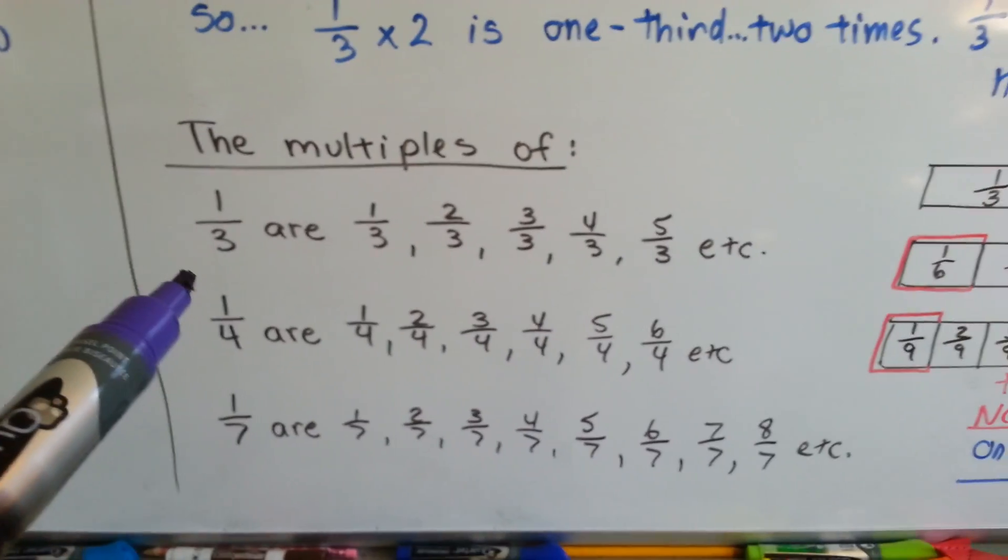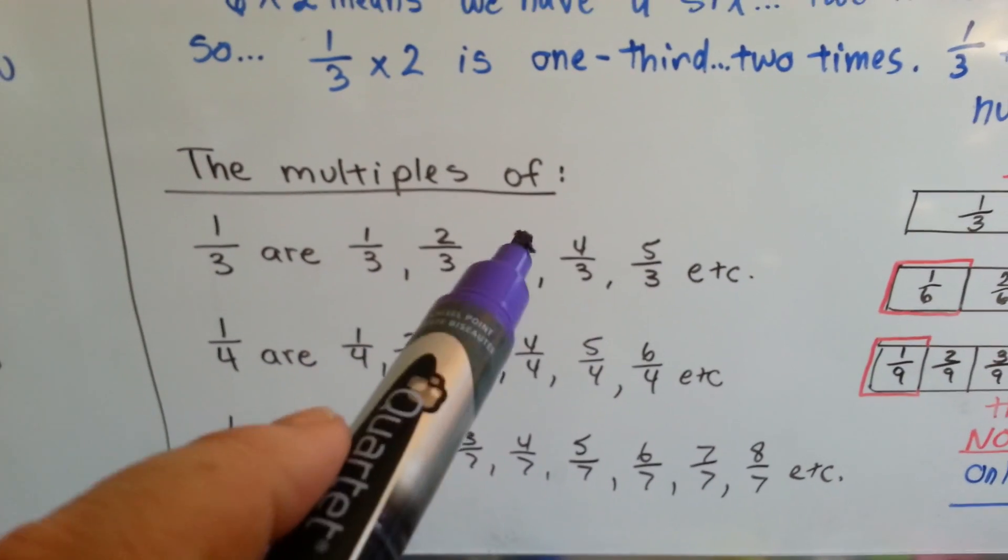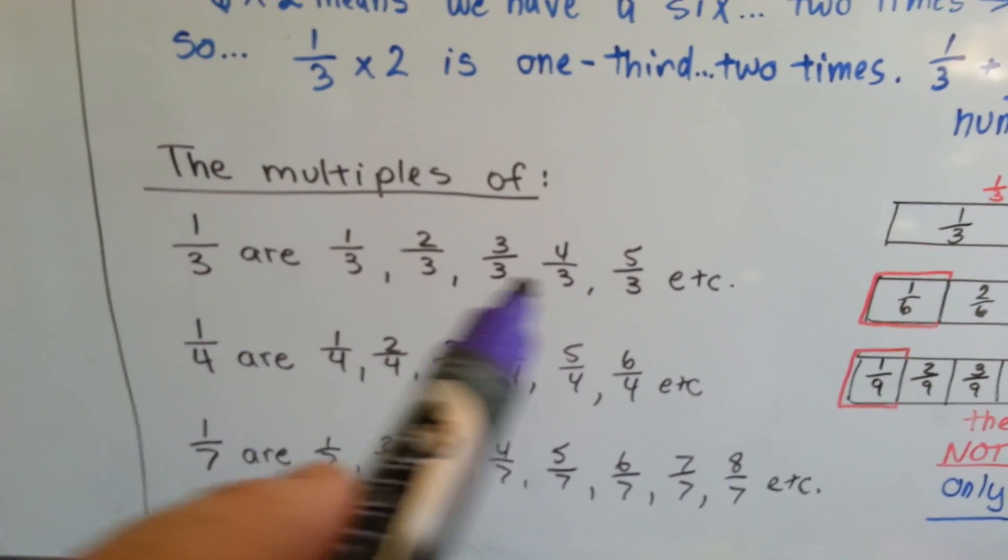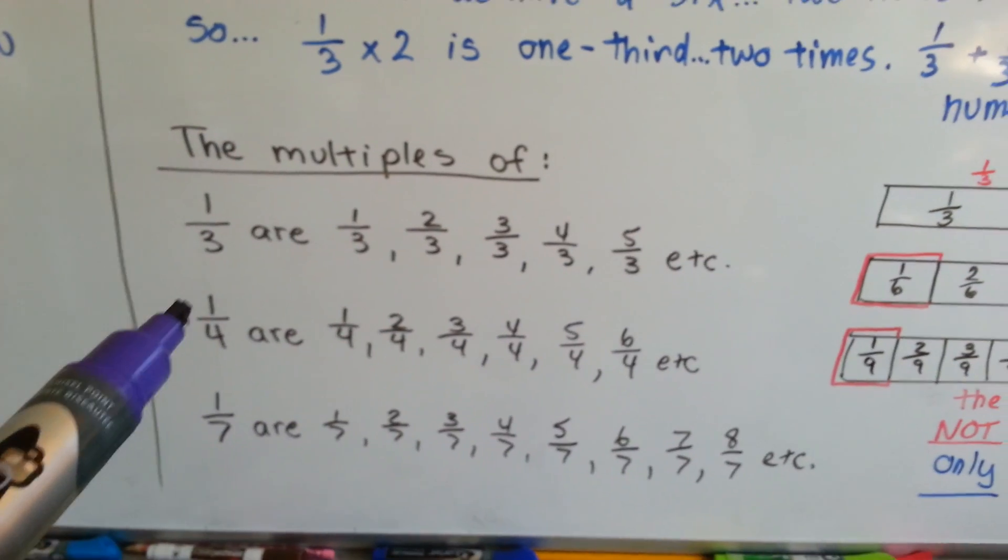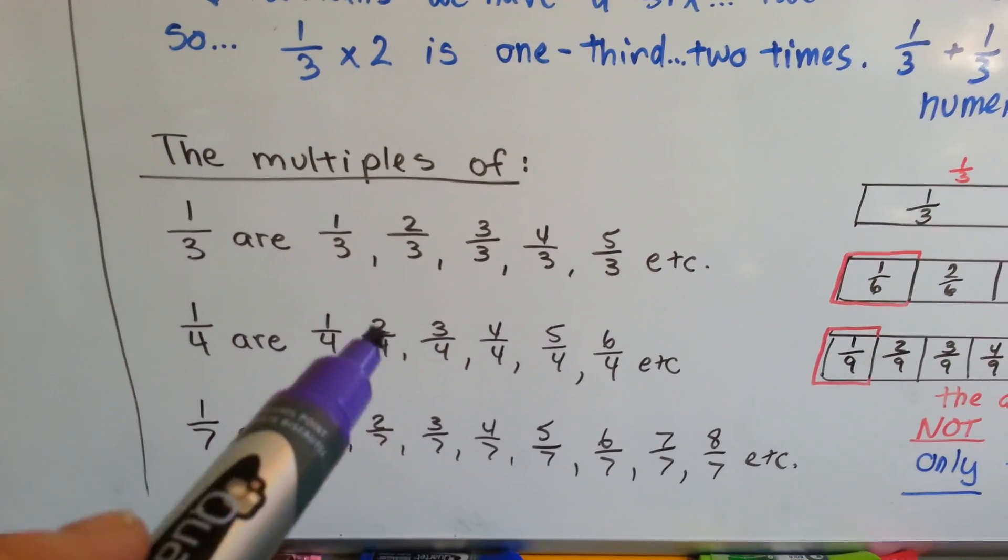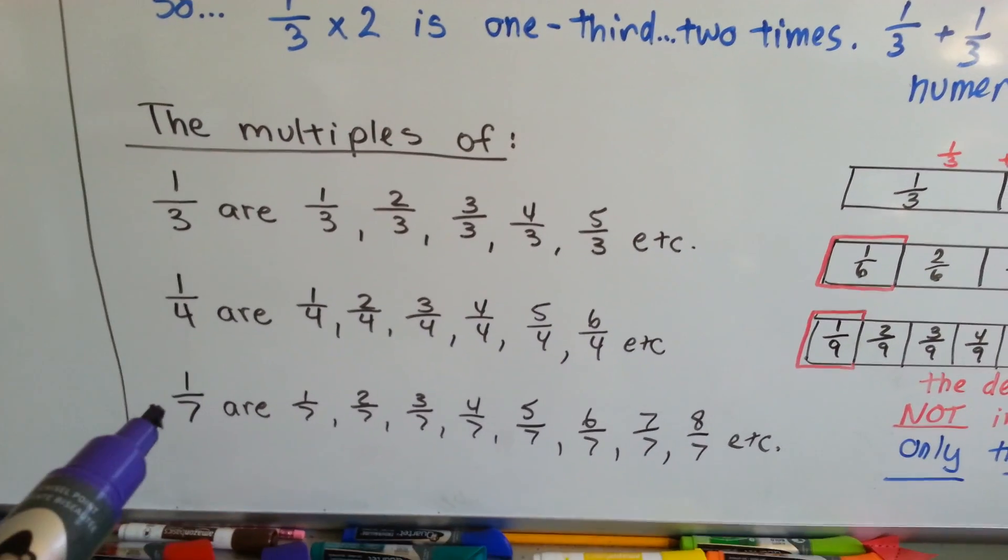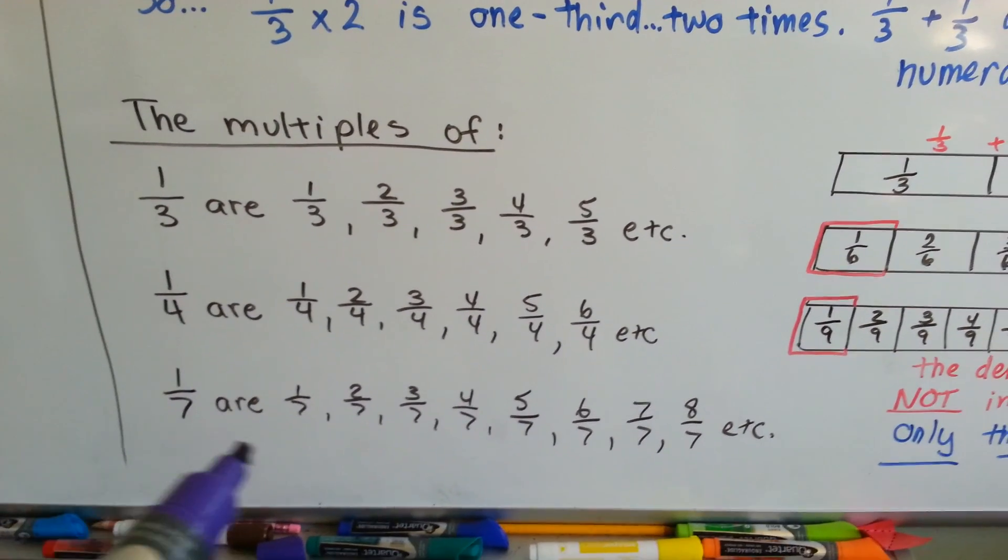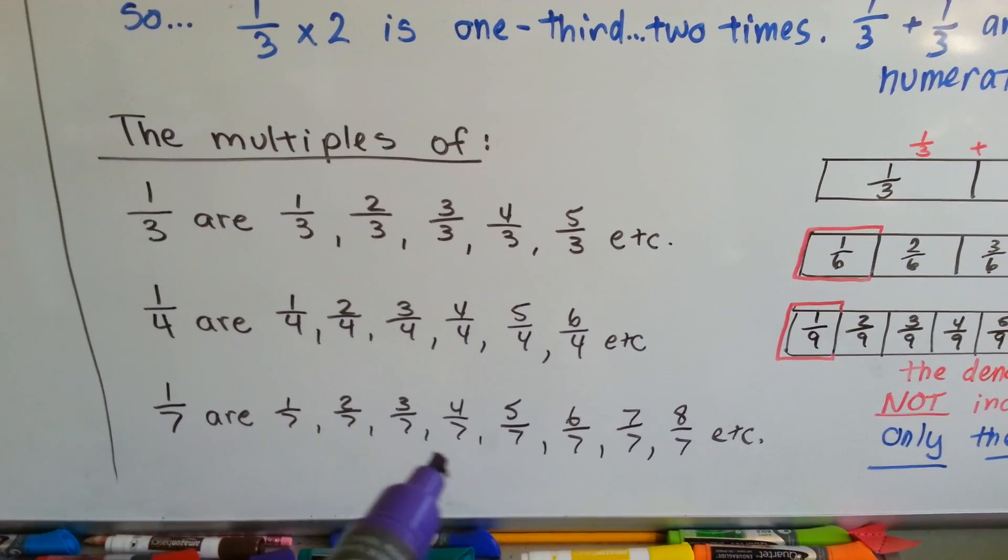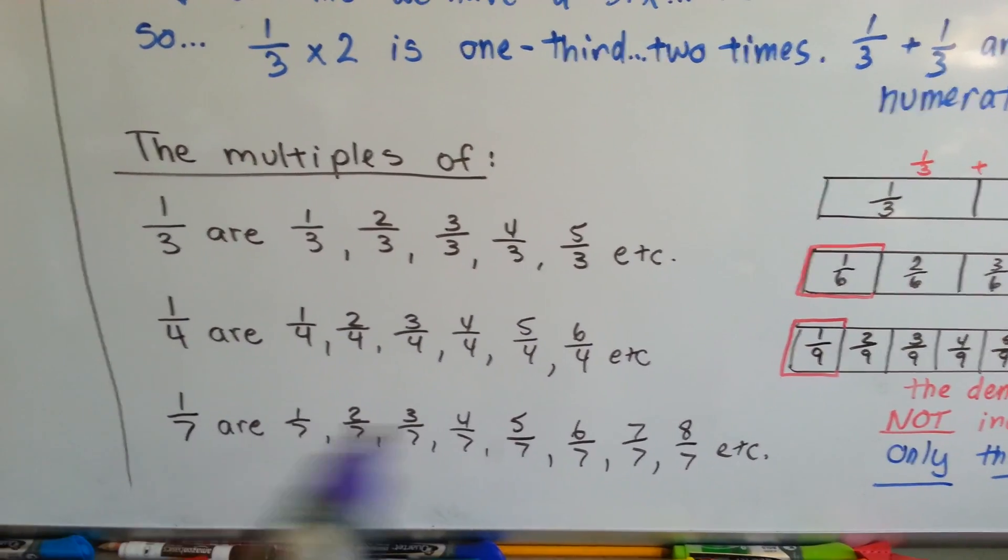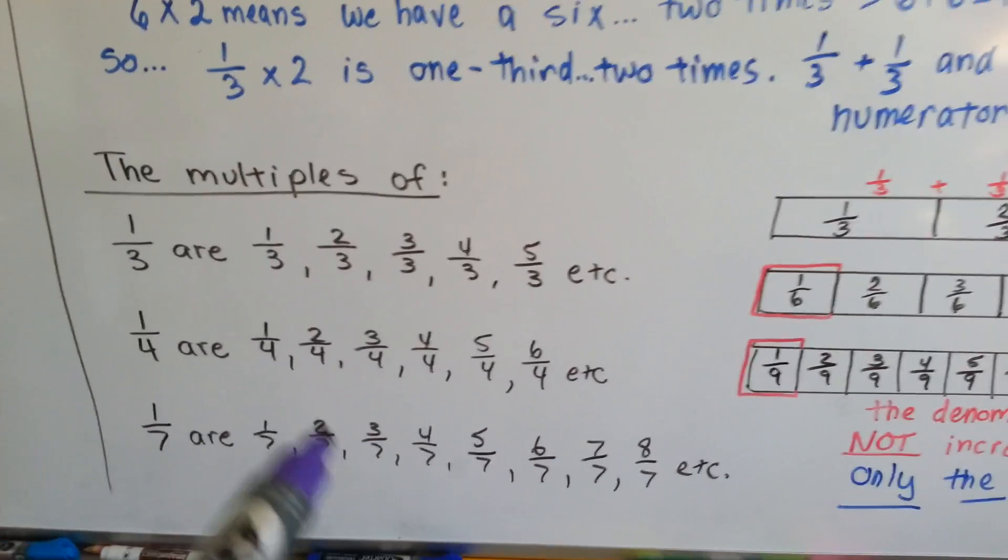So the multiples of 1 third are 1 third, 2 thirds, 3 thirds, 4 thirds, 5 thirds. Is that crazy? We didn't touch the denominator at all. The multiples of 1 fourth are 1 fourth, 2 fourths, 3 fourths, 4 fourths, 5 fourths, 6 fourths, etc. And the same thing for 1 seventh. 1 seventh, 2 sevenths, 3 sevenths, 4 sevenths, 5 sevenths. The numerator is going up, but the denominator is staying the same.